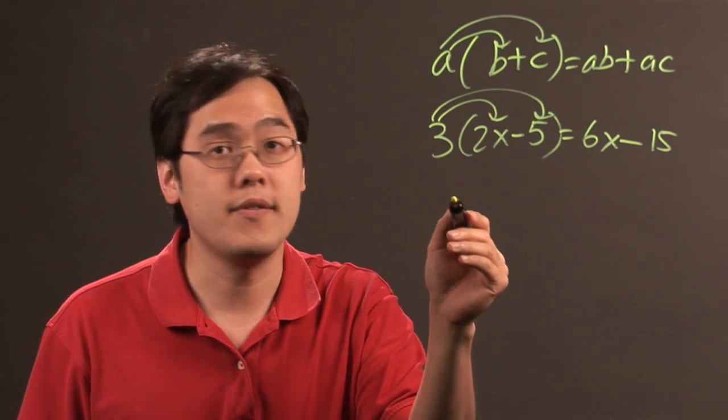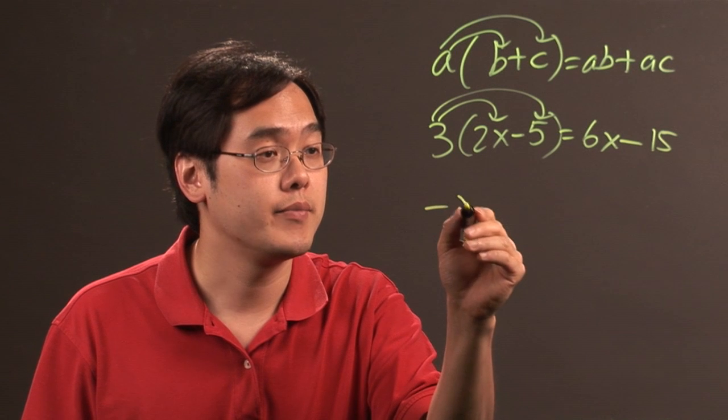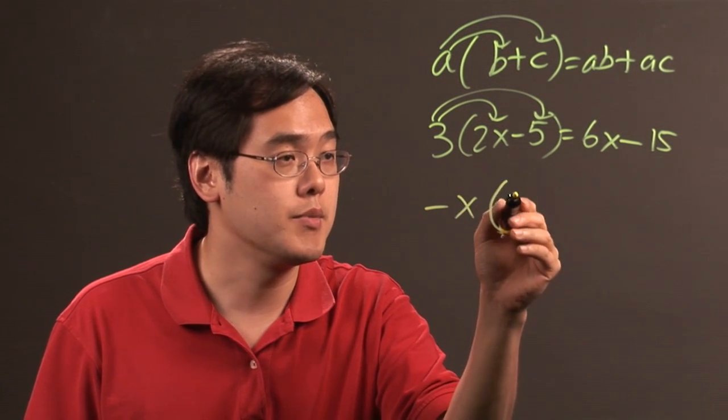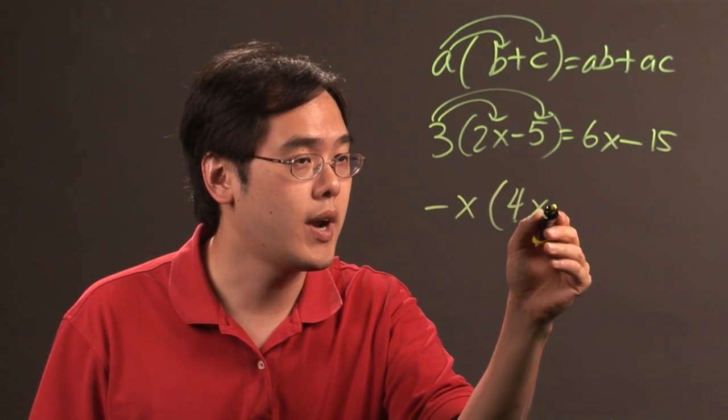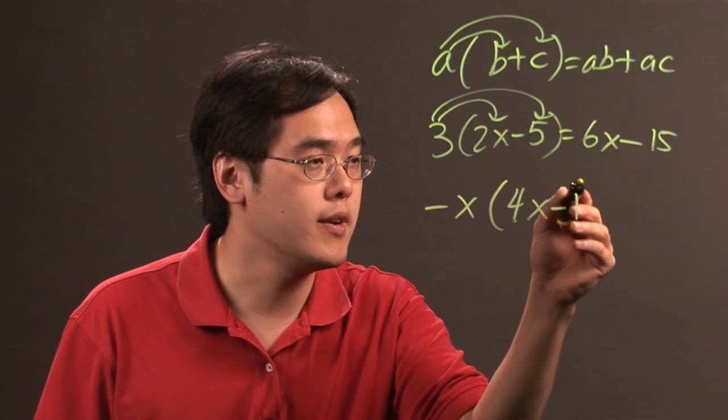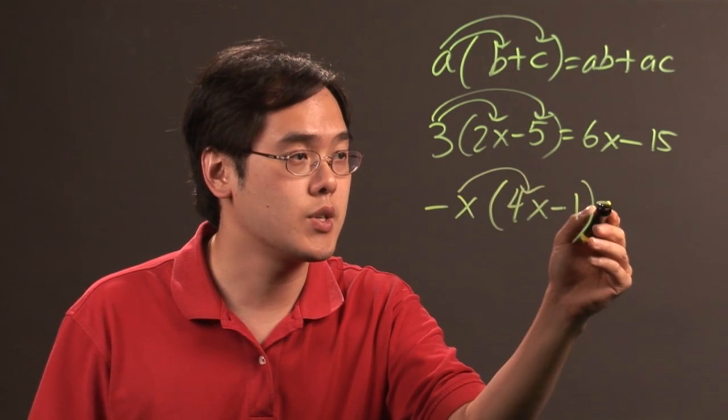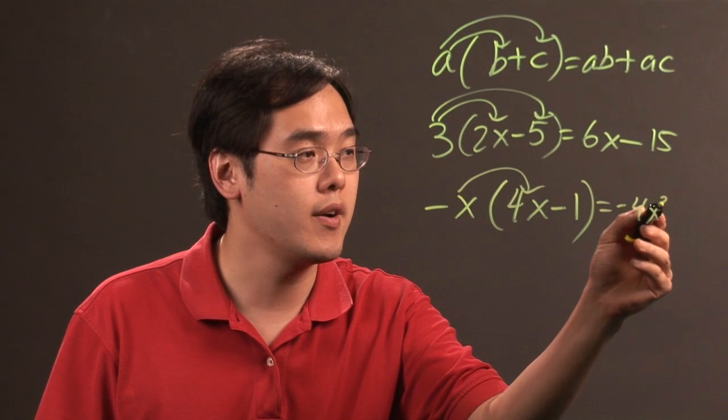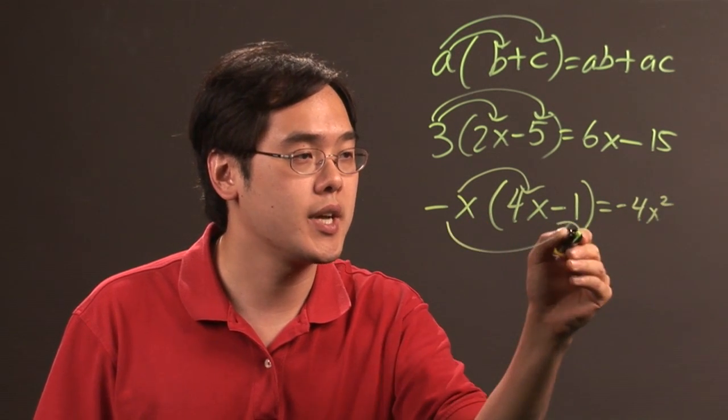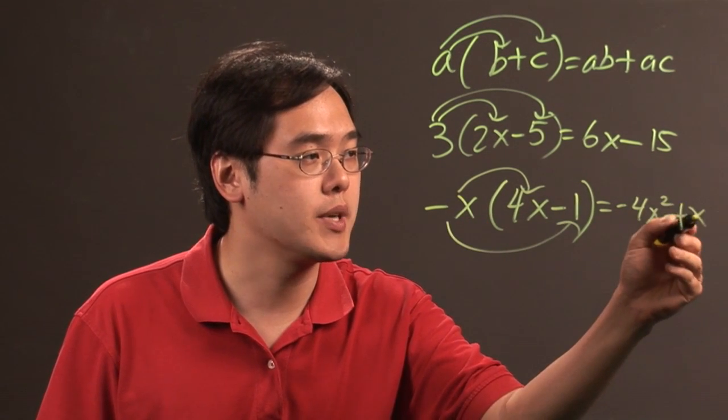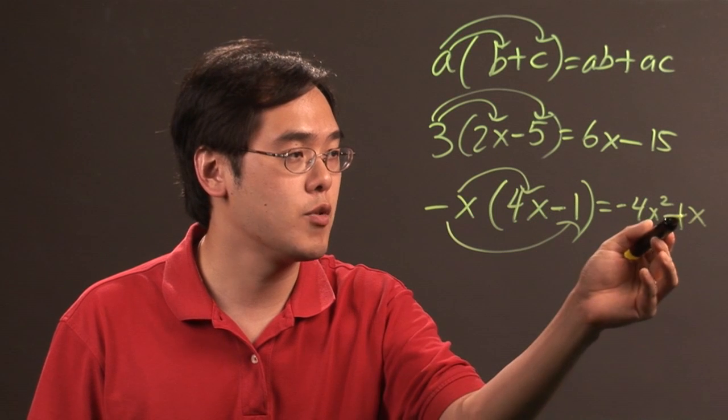Now the other thing is, you can even distribute negative terms. If you have negative x times 4x minus 1, for example, you do the exact same thing. Negative x times 4x is going to give you negative 4x squared, and negative x times negative 1 is going to give you positive x, because negative times a negative is going to give you a positive.